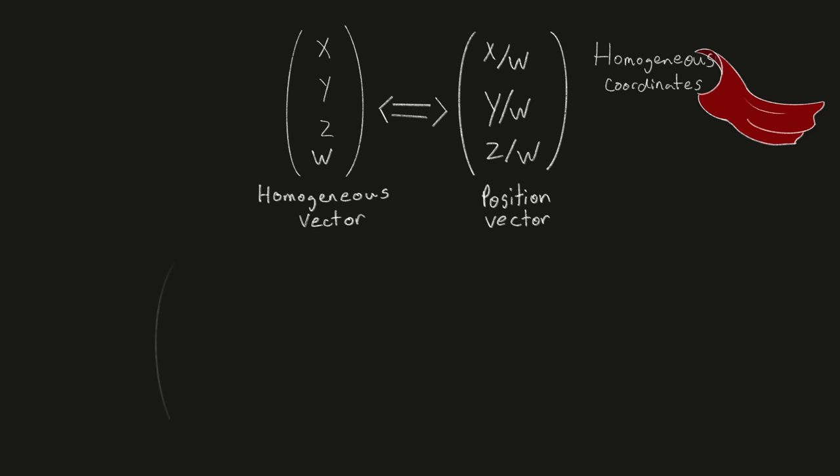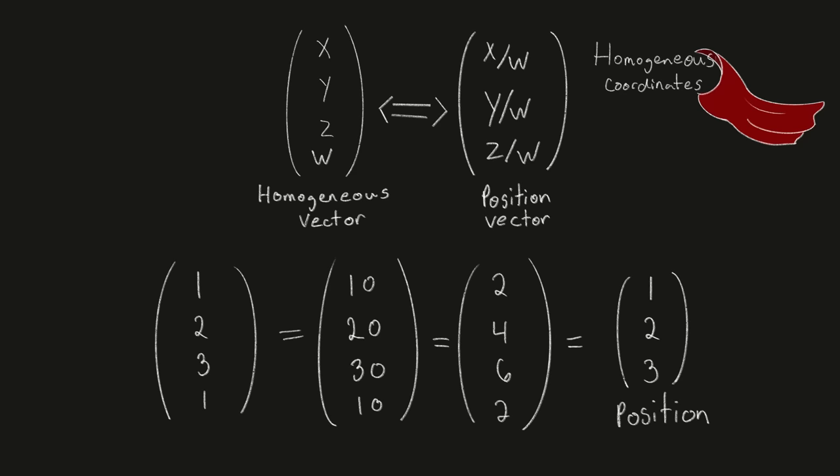This also means that vector 1, 2, 3, 1 is equal to the vector 10, 20, 30, 10, which is also equal to the vector 2, 4, 6, 2. These all represent the exact same position at 1, 2, 3.